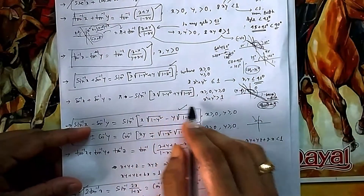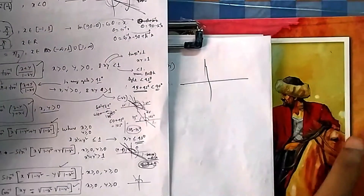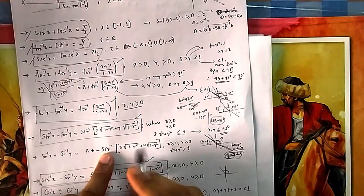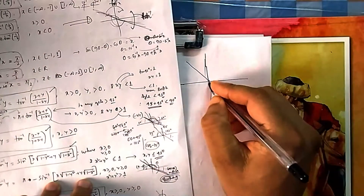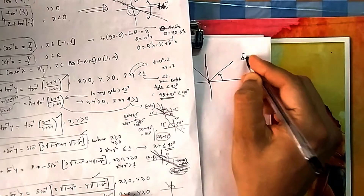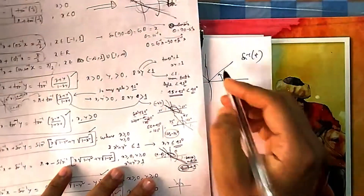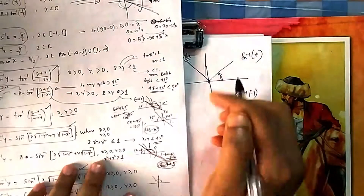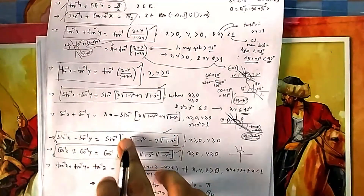When x² + y² > 1, the two angles both greater than 45° — say 60°+60°=120° — land in the second quadrant. Sin of 120° is still positive, so sin⁻¹ gives a first quadrant answer. But the actual answer, 120°, is in the second quadrant. To shift from the first to the second quadrant you use π − θ. That's why the formula becomes π − sin⁻¹(x√(1−y²) + y√(1−x²)).